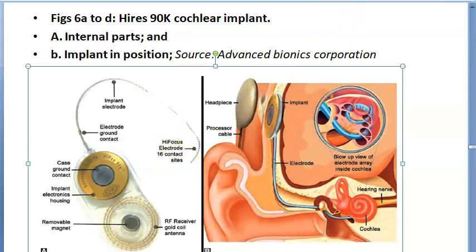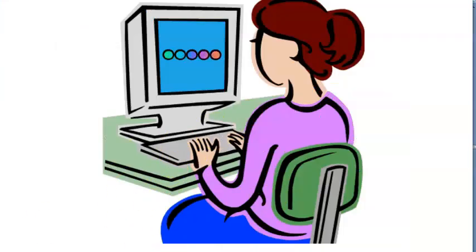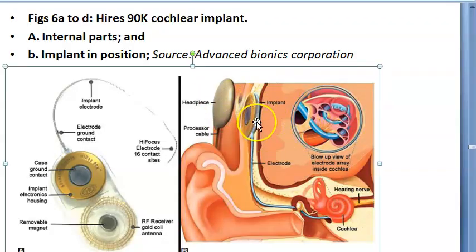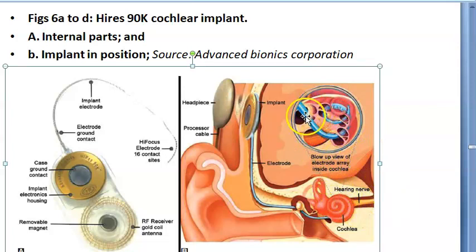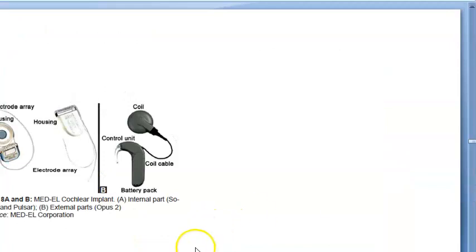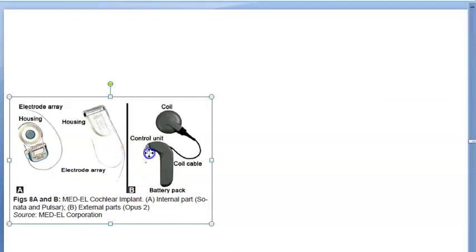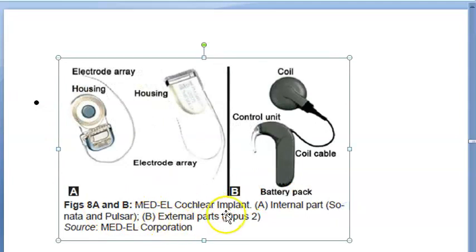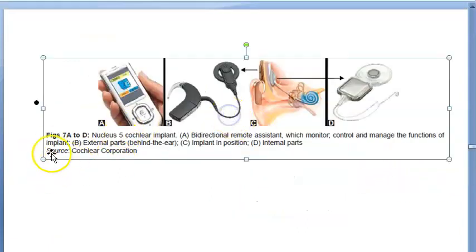Looking at the cochlear implant in place in the ear: the headpiece, implant, and electrode inside the cochlea. A blow-up view shows the electrode array inside the cochlea - it would be quite difficult to coil this inside. Here is the MED-EL cochlear implant internal part: this is Sonata and this is Pulsar, and this is the external part.